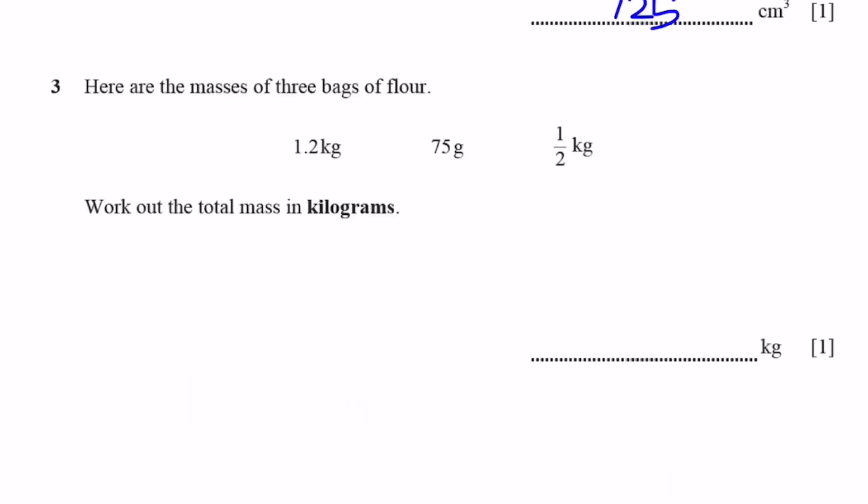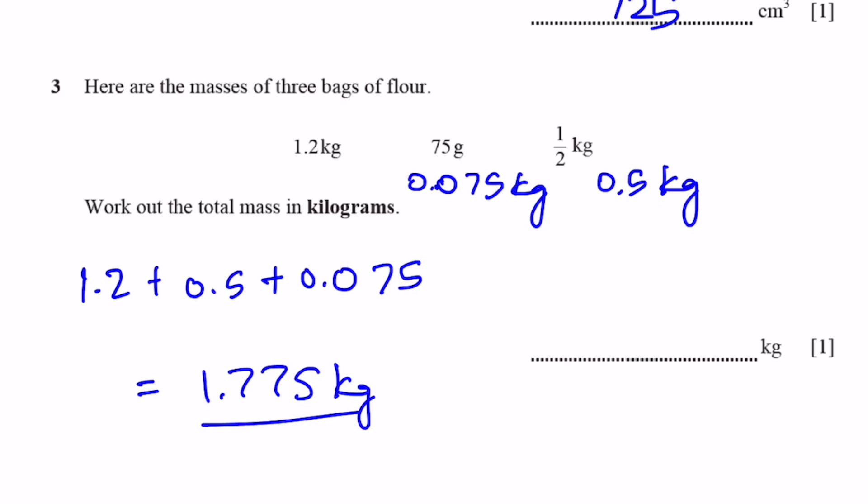Question 3. Here are the masses of three bags of flour. What are the total mass in kilograms? So half kilogram will be 0.5 kilograms, and 75 grams is going to be 0.075 kilograms. If we do 1.2 plus 0.5 plus 0.075, we will get 1.775 kilograms. That's the answer.